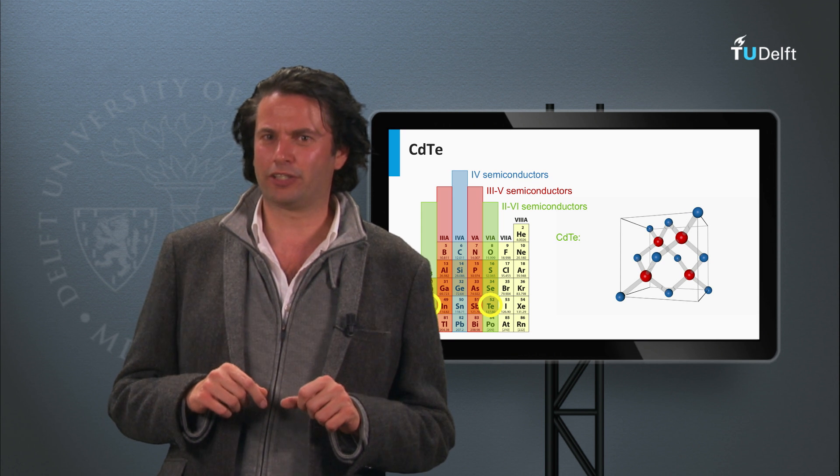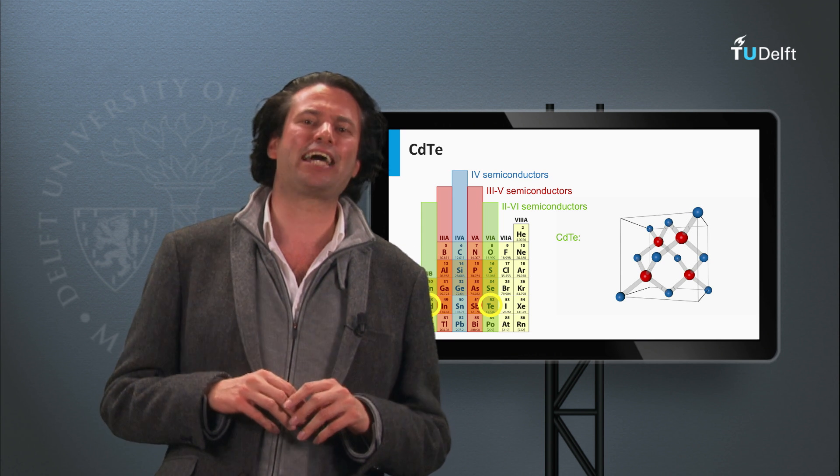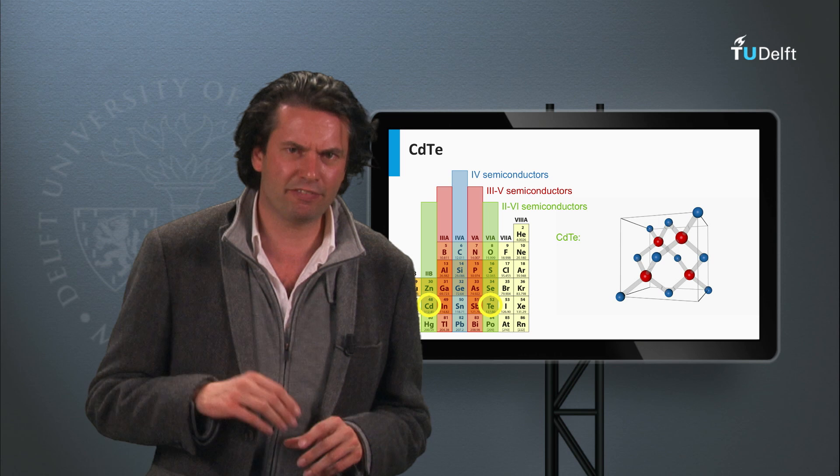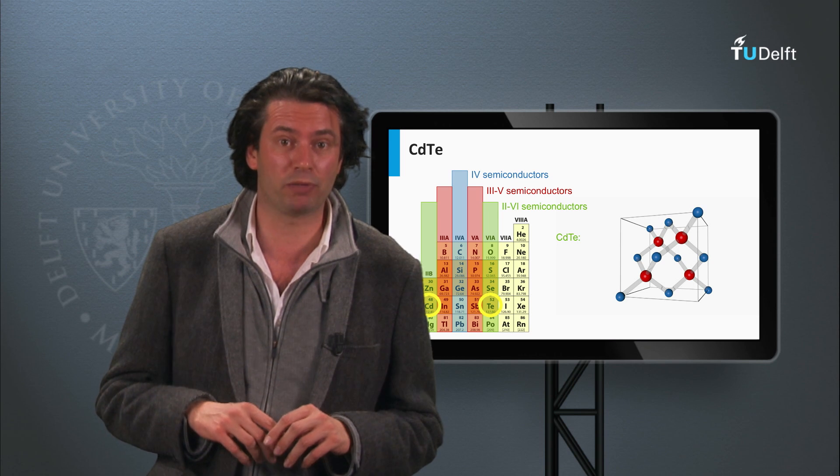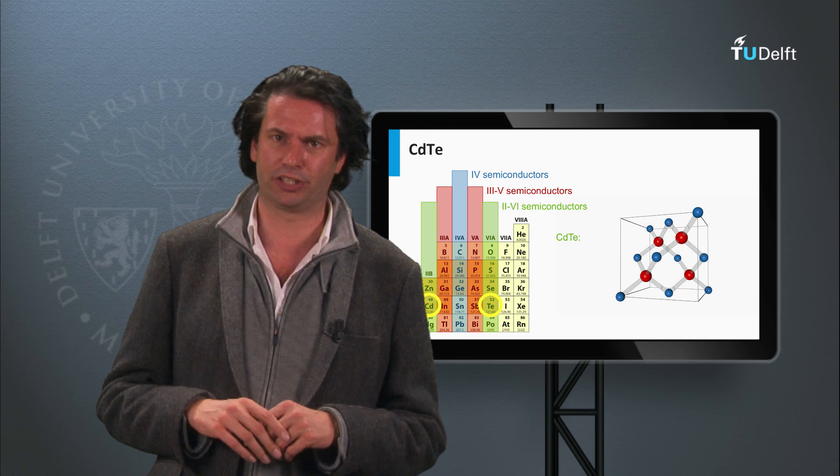A third thin film technology we will discuss is cadmium telluride. This thin film technology has currently demonstrated the lowest cost price per watt peak among all PV technologies.